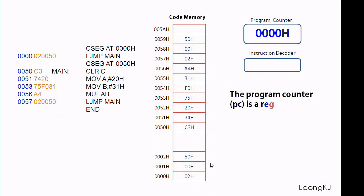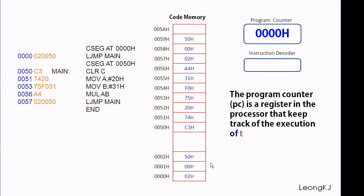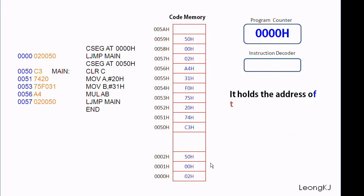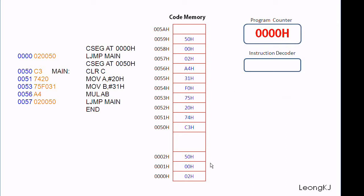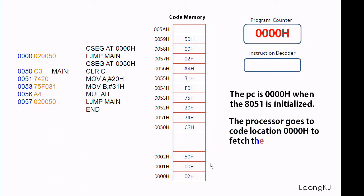The program counter, or PC, is a register in the processor that keeps track of the execution of the program in the processor system. It holds the address of the next instruction to be executed. The PC is 0 when the 8051 is initialized. The processor goes to code location 0000 to fetch the instruction code.